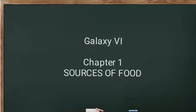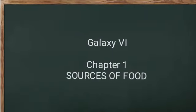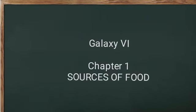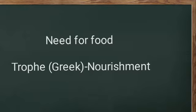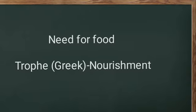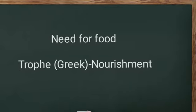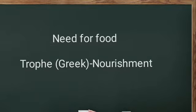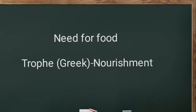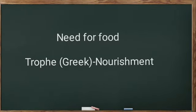Hi friends, today we are starting with the first chapter: Source of Food. Why we need food is for nourishment, and it comes from the Greek word 'trophy', which means nourishment.